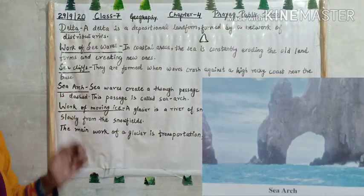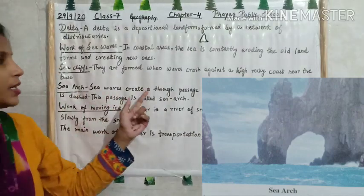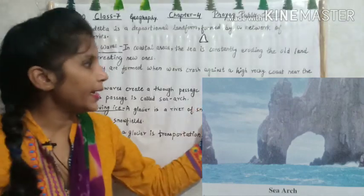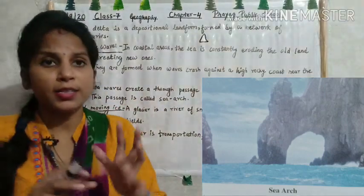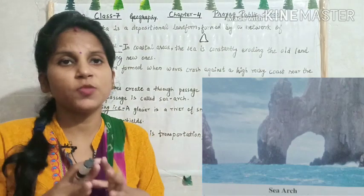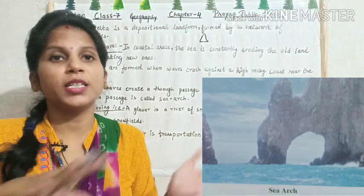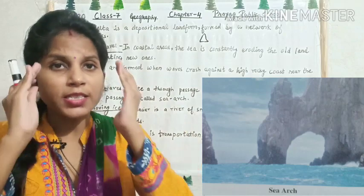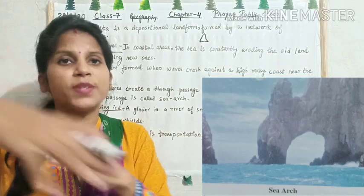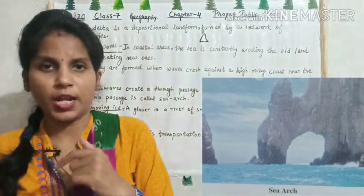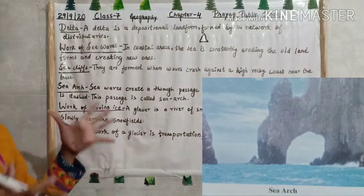Sea arc — arc means half circle. Sea waves create a through-passage when a headland projecting into the sea is dashed repeatedly. This passage is called a sea arc. When sea waves crash and dash against the land, they create an arch-shaped passage through the headland. That passage, that way through, we call a sea arc.